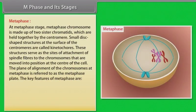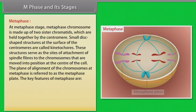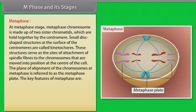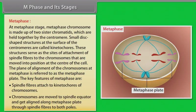The second stage of mitosis is called Metaphase. At this stage, metaphase chromosome is made up of two sister chromatids which are held together by the centromere. Small disc-shaped structures at the surface of the centromeres are called kinetochores. These structures serve as the sites of attachment of spindle fibers to the chromosomes that are moved into position at the center of the cell. The plane of alignment of the chromosomes at metaphase is referred to as the metaphase plate.